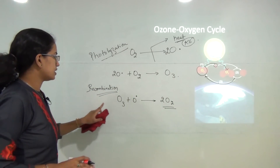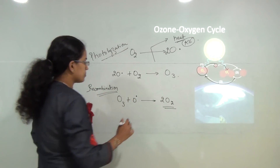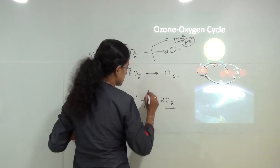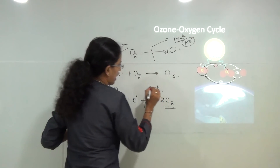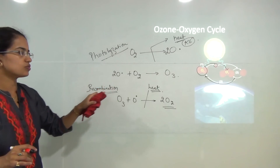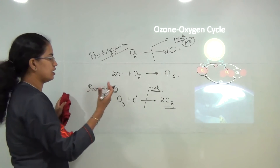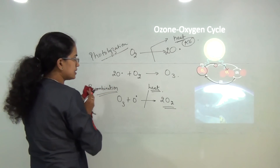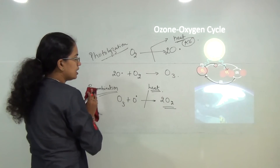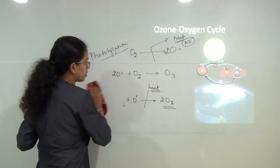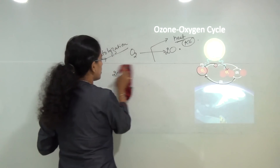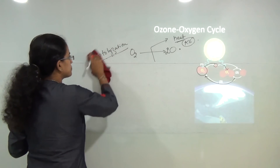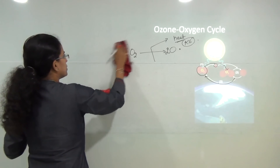Under this recombination reaction, there is dissipation of heat, and this heat is the main source of kinetic energy in the atmosphere or the upper atmosphere.